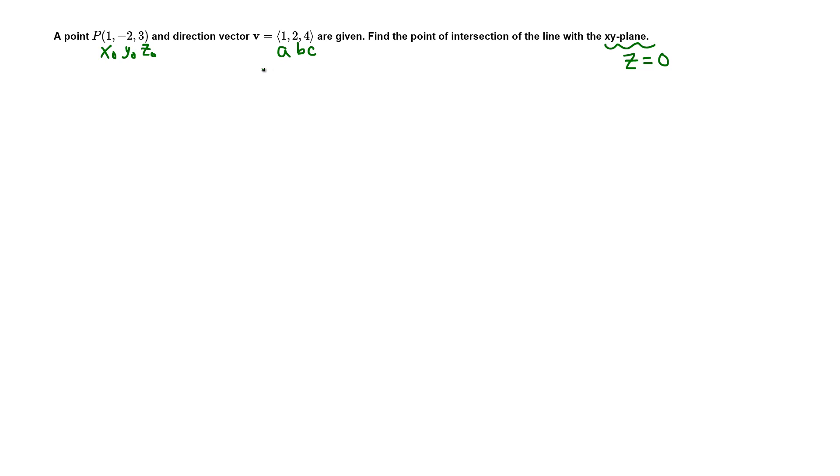And since ABC are not 0, the symmetric equations for the line are x minus x naught over A equals y minus y naught over B equals z minus z naught over C.